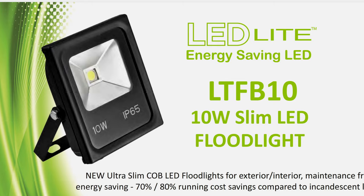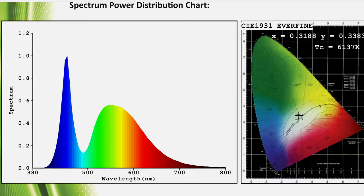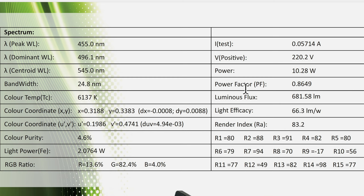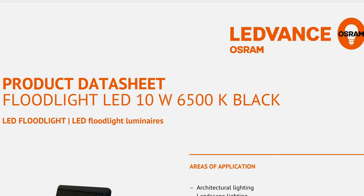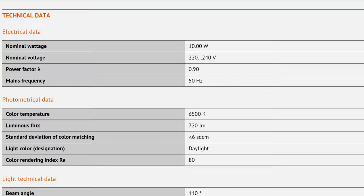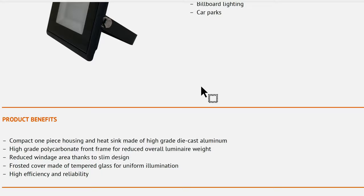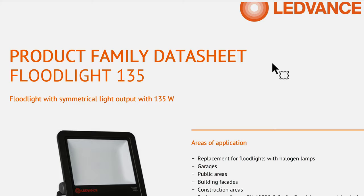Looking at some datasheets for floodlights — if I scroll down we have the specifications, but notice it doesn't give the inrush current. It just says power: 10.28 watts, and may include the power factor, but no inrush current. Looking at one from Osram, it just says 10 watts with no other values to help determine the inrush current or how many floodlights could connect to one circuit breaker.